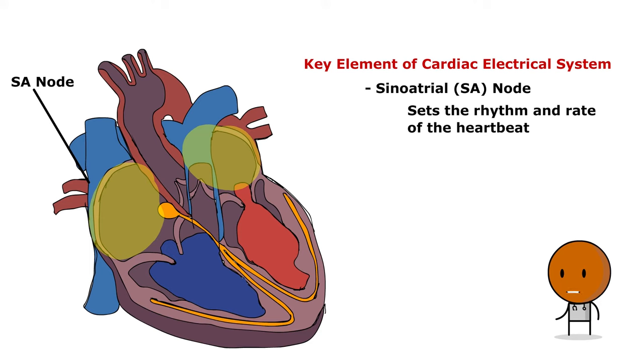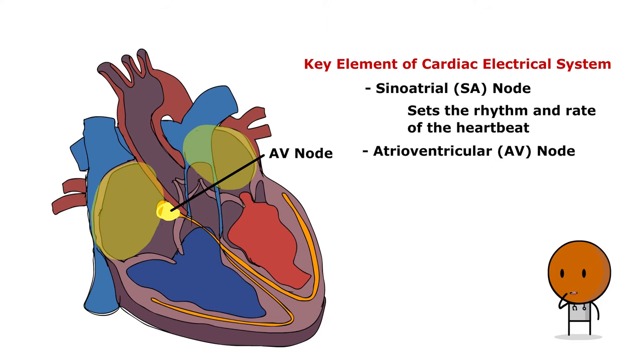The electrical relay station, known as the AV node, is positioned at the right atrium's opposite side, adjacent to the AV valve. The AV node momentarily holds the electrical signal, allowing the atria to finish contracting and effectively transfer blood into the ventricles before the ventricles themselves contract.